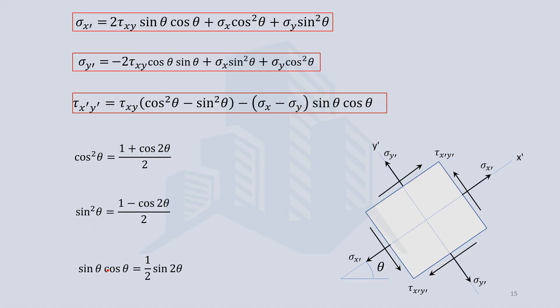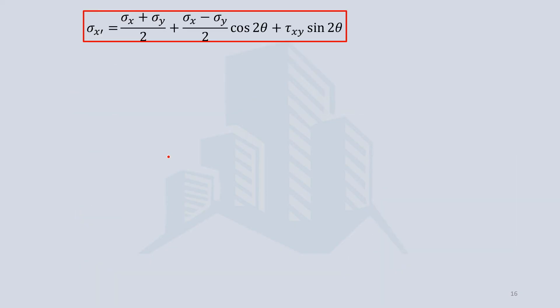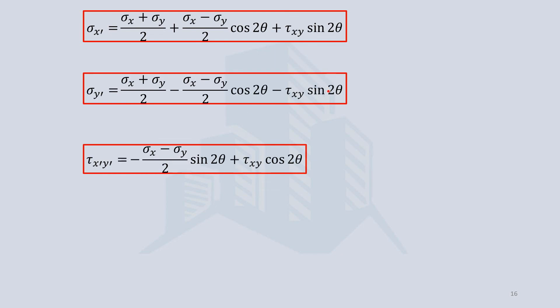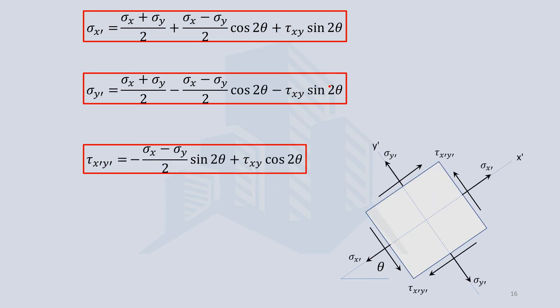Replacing the trigonometric expressions with their double-angle equivalents and simplifying, we get an alternative compact form of the stress transformation equations. These alternative forms are easier to remember, but they give the same results as the previous equations — the stresses on a plane inclined at angle theta with the x-plane.